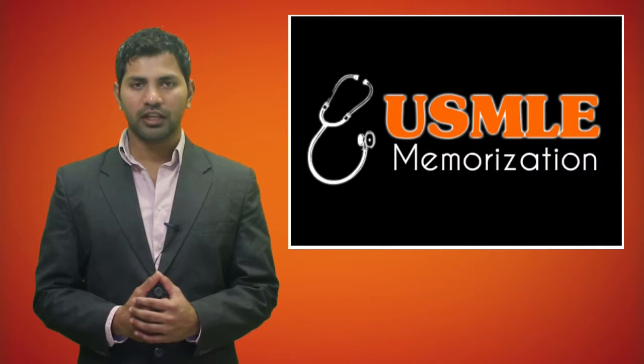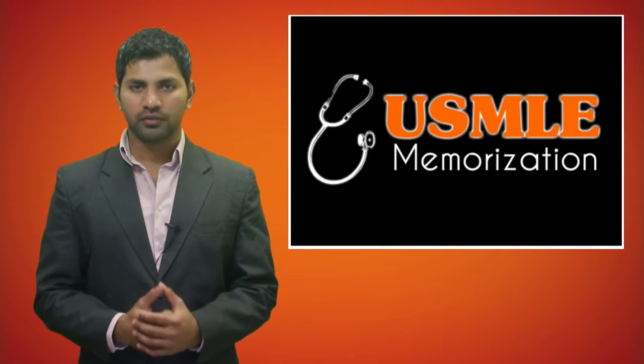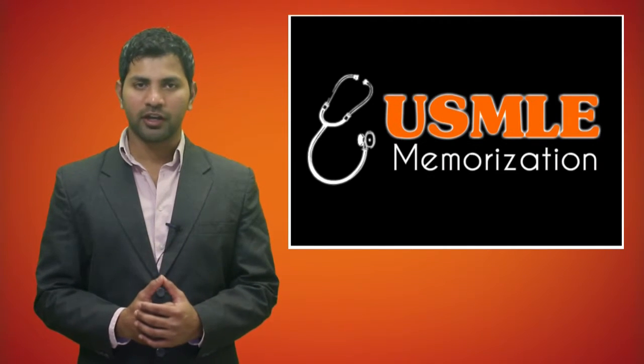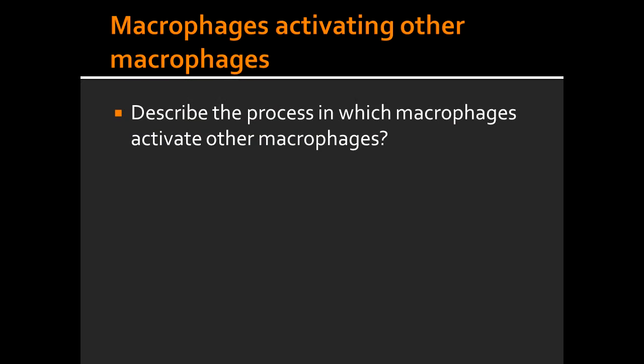Welcome to USMLE Memorizations. Today we're going to talk about how macrophages will end up activating other macrophages. The way this is done is the macrophage, which is also known as an antigen-presenting cell, will go ahead and produce interleukin-1.